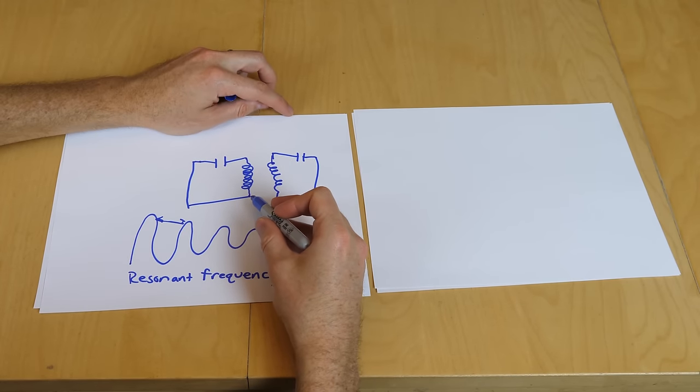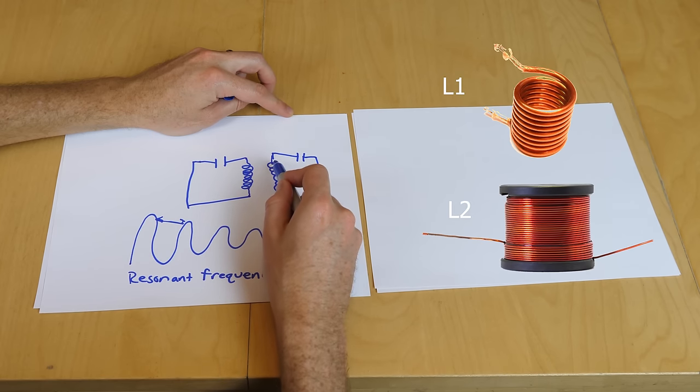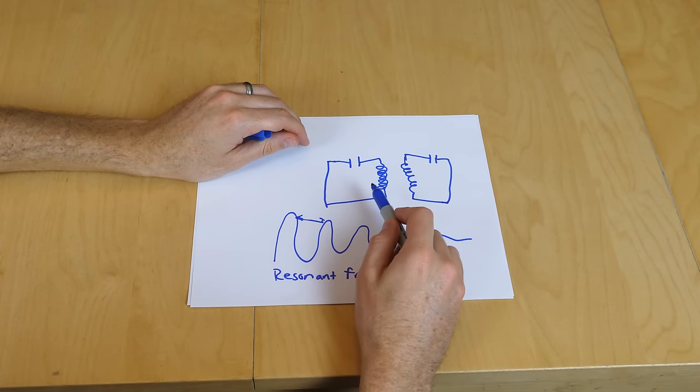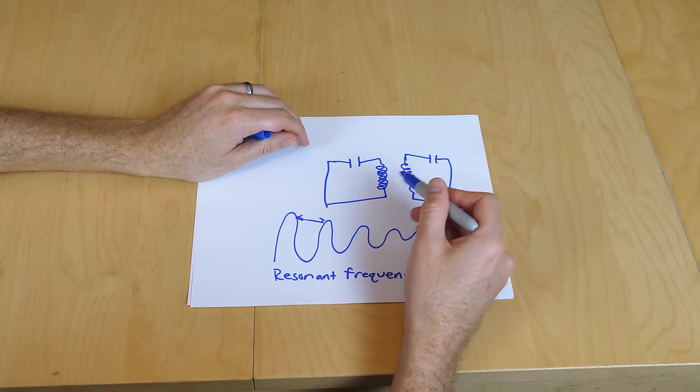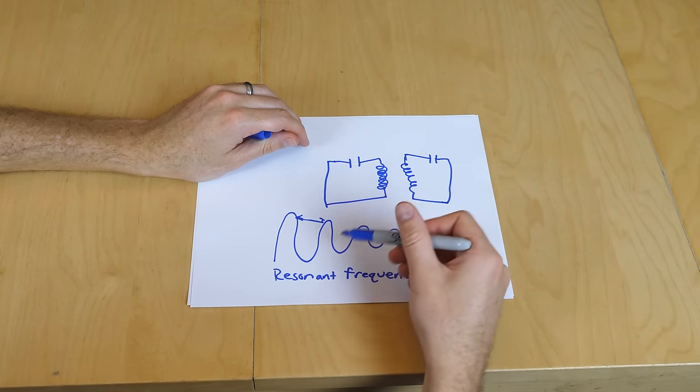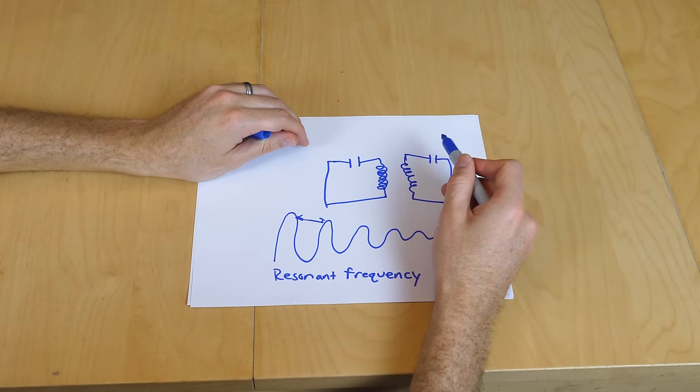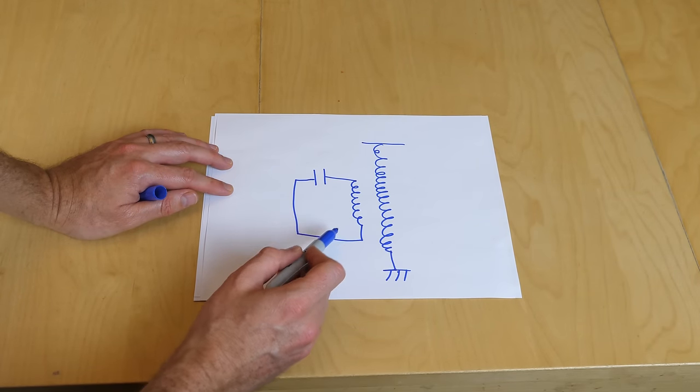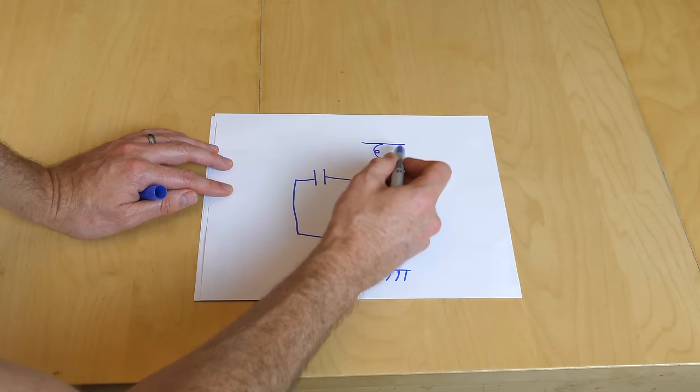And the way a Tesla coil works to step up the voltage is first it uses more turns of wire in this inductor than this one. And so that steps up the voltage. And what's really cool is if you get another circuit that has the same resonant frequency as this one, you can basically step up the voltage very high, so that with each additional swing of the voltage, you can push the voltage higher and higher, till eventually you get extremely high voltages in this wire. And this is basically how a Tesla coil works. It steps up the voltage so that you get extremely high voltages.